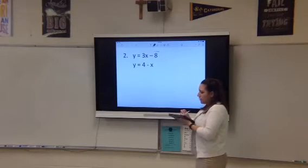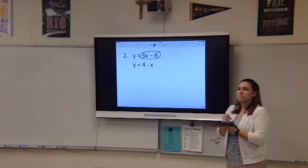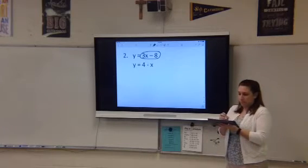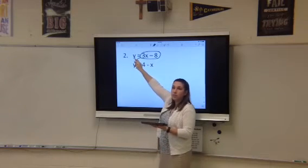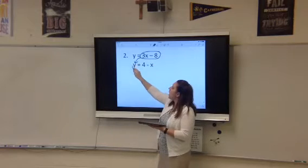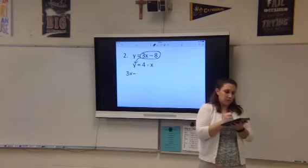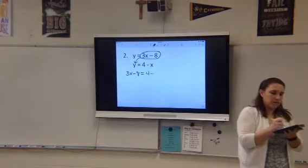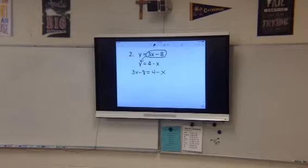So where do I take this 3x minus 8 and where do I put that in at? Put it in for the y, right? So this tells you what to replace. I'm replacing the y with 3x minus 8. Alright, so in place of this y, I'm going to put 3x minus 8. Equals 4 minus x. Okay, now it's just solving equations.